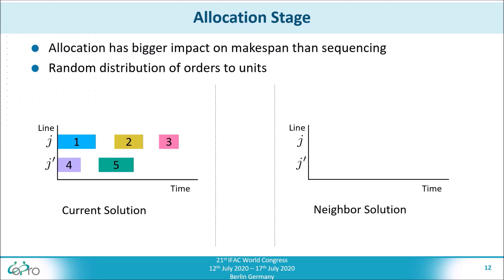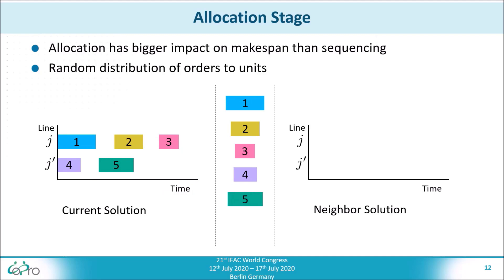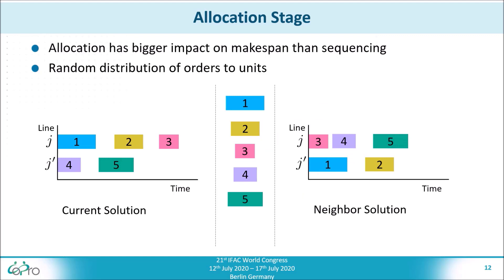Here you can see an example of the generation of a neighbor solution in the allocation stage. First, the current solution is used to generate a list of orders. Afterwards, these orders are redistributed to the lines, respecting the line eligibility constraints.